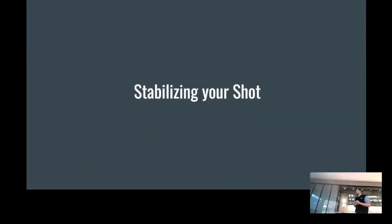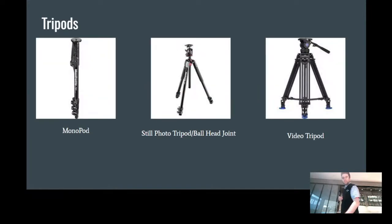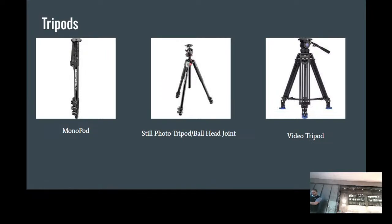Next we'll talk about stabilizing your shot — this is where we wind down for the class. When taking pictures or videos, a lot of people have shaky hands, and if you move or shake you won't get the image clarity you're looking for. Tripods are the first option — mainly for photography, though at the very end there's a video tripod. A monopod has one leg — one stick that comes down — and you can attach your camera to it. Great for hikers and travelers who don't want something heavy to lug around. You can wedge it into rocks and still get your position, though it can be a little shaky.